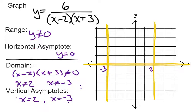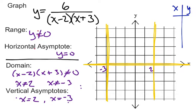Last time, when we just had one vertical asymptote, we picked a couple of points to the left and a couple to the right to get an idea of what the graph will look like. We're going to go about it kind of the same way — we need to plot some points, but we don't need quite as many. This time, let's just plot one point on each interval. I'm going to want a point less than negative 3, like negative 4; one in between negative 3 and 2, like 0; and one bigger than 2, like 3.